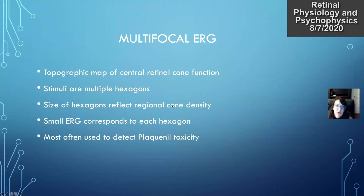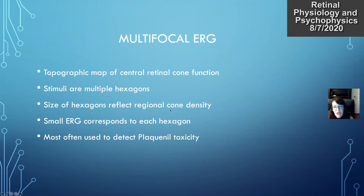Multifocal ERG provides more of a topographic map of cone function and is confined to the macula. The stimuli are multiple hexagons flashed in different locations and different sizes depending on the cone density of the area. You get a small ERG corresponding to each hexagon. We use it primarily to look at Plaquenil toxicity because you're able to detect different regions of macular dysfunction.